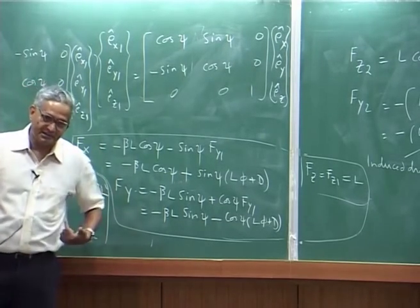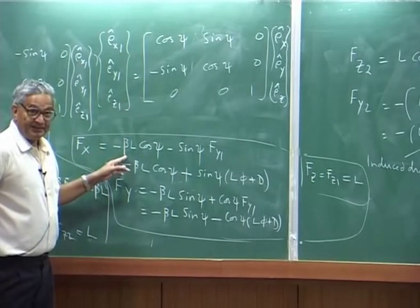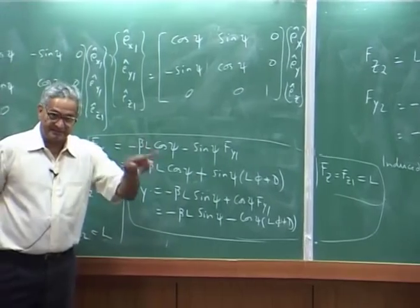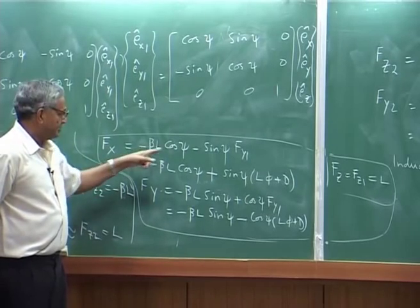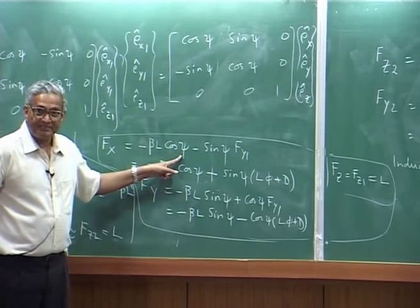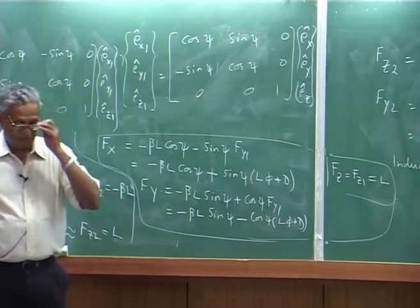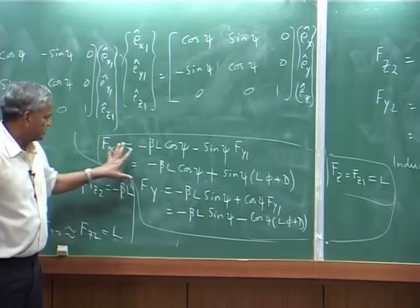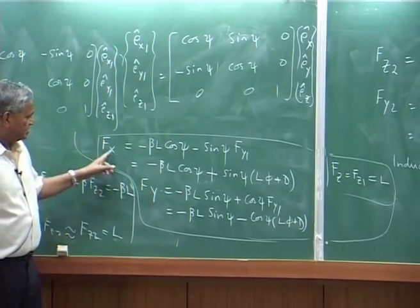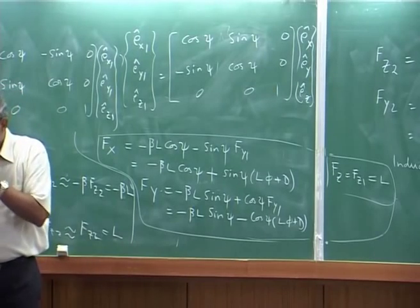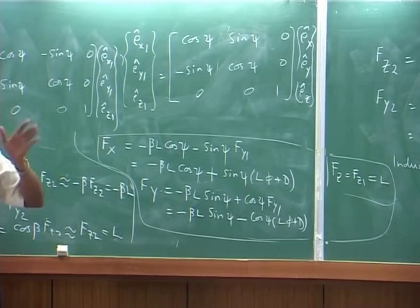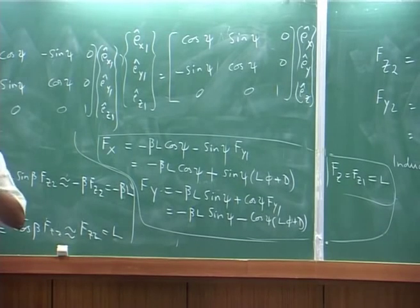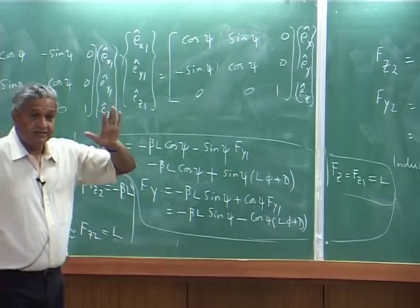You need to integrate over the span of the blade and then add the value from each blade. When you get the hub load, every blade will give some load depending on where its location is. You see my hub loads — even looking at the simple expression — are functions of psi. Psi is omega t, so my hub load is a function of time. It is not a constant. As the blade goes round, my load is varying with time.